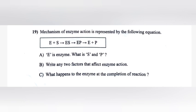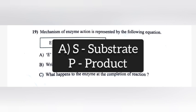19. Mechanism of enzyme action is represented by the following equation. A: E is an enzyme. What is S and P? Answer: S is substrate, P is product.